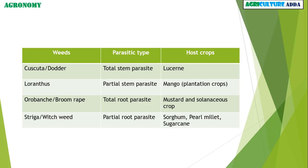This is a table of different parasitic types of weeds and their host crops. Cascuta is a total stem parasite and its host crop is Lucerne. Loranthus is a partial stem parasite and its host crop is Mango. Orobanche or Broomrape is a total parasite and its host crops are Mustard and Solanaceae crops. Striga or Witchweed is a partial root parasite and its host crops are Sorghum, Pearl Millet, and Sugarcane.